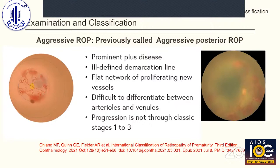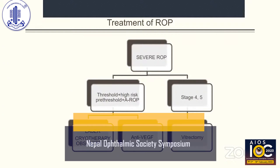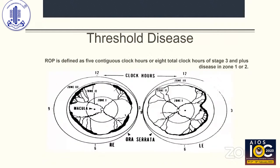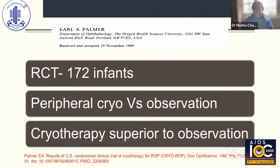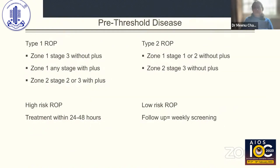Treatment of ROP is mainly needed for severe disease; Stage 4 and 5 ROP requires vitreoretinal surgery. The threshold disease indication was used in the prior ROP study, which showed cryotherapy was superior to observation. The ET-ROP trial then showed that early peripheral laser — before the eye reaches threshold disease — had better outcomes. This high-risk pre-threshold disease, classified as Type 1, includes Zone 1 Stage 3 without plus, Zone 1 any stage with plus, and Zone 2 Stage 2 or 3 with plus, requiring treatment within 24 to 48 hours.